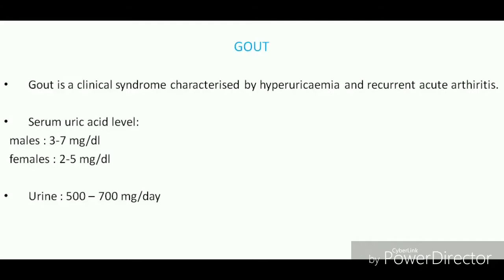Gout is a clinical syndrome characterized by hyperuricemia and recurrent acute arthritis. Uric acid is the end product of purine catabolism. An increase in blood uric acid level more than 7 mg per deciliter is called hyperuricemia. Chronic hyperuricemia leads to renal stone formation and deposition of monosodium urate crystals into joints, causing chronic inflammation and arthritis, especially of the big toe.